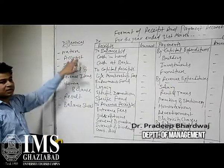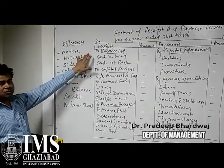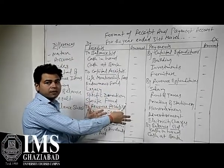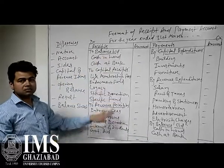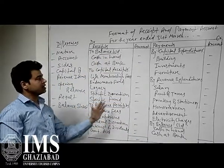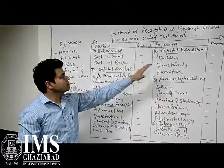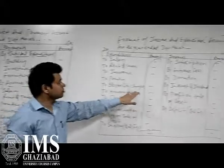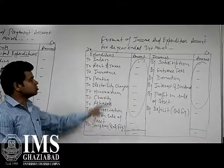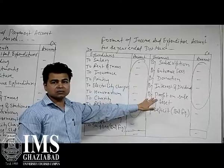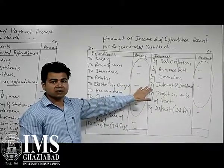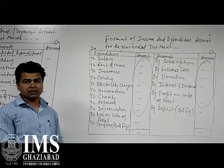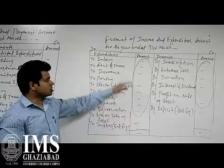The first basis of difference is nature. The Receipts and Payment Account is very similar to a cash book — the debit side represents all receipts and the credit side represents all payments. The Income and Expenditure Account is very similar to a nominal account, showing only incomes and expenditures, just like a trading and P&L account, where expenses are on the debit side and incomes on the credit side.